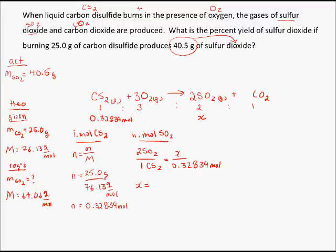Simply put, I should get twice as many moles of SO2 as the CS2 that I started with. And that turns out to be 0.65677 moles.